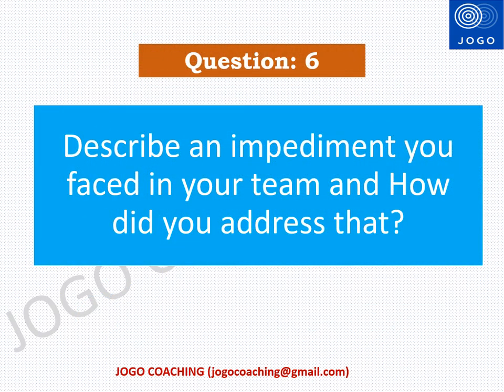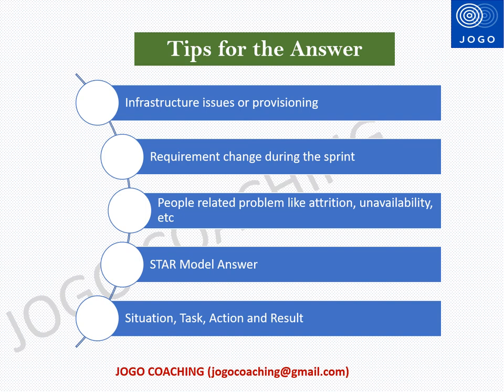Now let us see the answer for the question: describe an impediment you faced in your team and how did you address that? One of the main activities of a Scrum Master is removing impediments. You can highlight impediments related to infrastructure issues, requirement changes during the sprint, or people-related problems like attrition and unavailability. Provide your answer in the STAR model: S for Situation — explain the actual situation; T for Task — what was the expected task from your side; A for Action — what actions you took; and R for Result — the outcome of your action.